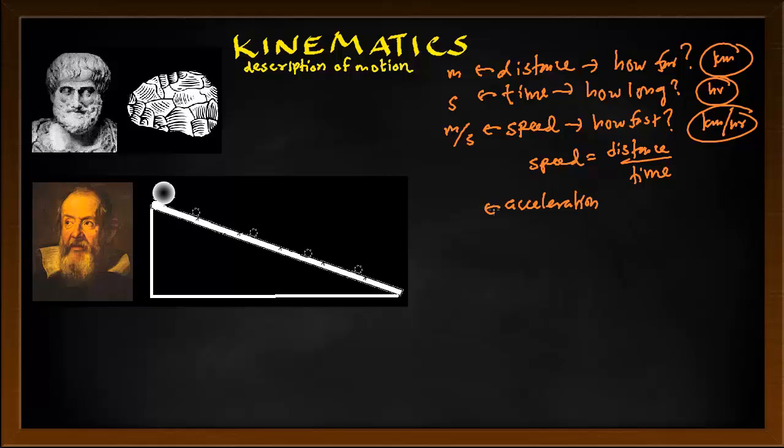The first person to think about kinematics was Aristotle, but unfortunately he got it wrong. He thought of a stone and said things don't want to move. The person who finally got it right was Galileo. He did experiments instead of just thinking — he rolled a marble along a ramp and came up with all the concepts of speed and acceleration.